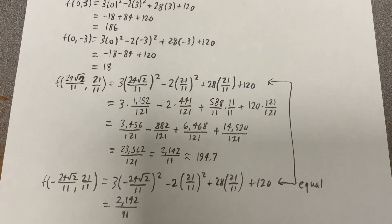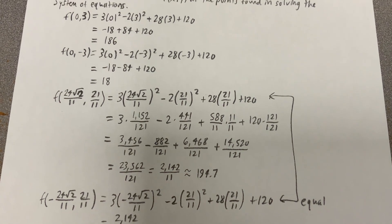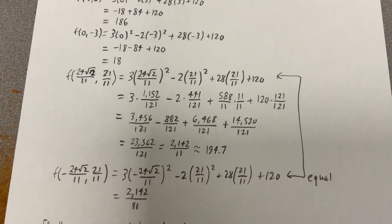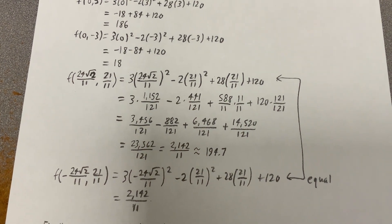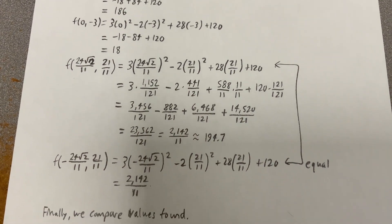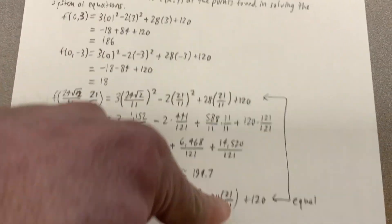f of negative 24√2/11, comma 21/11. Because the x squared made the negative number positive, we're actually going to have the exact same values here and here.